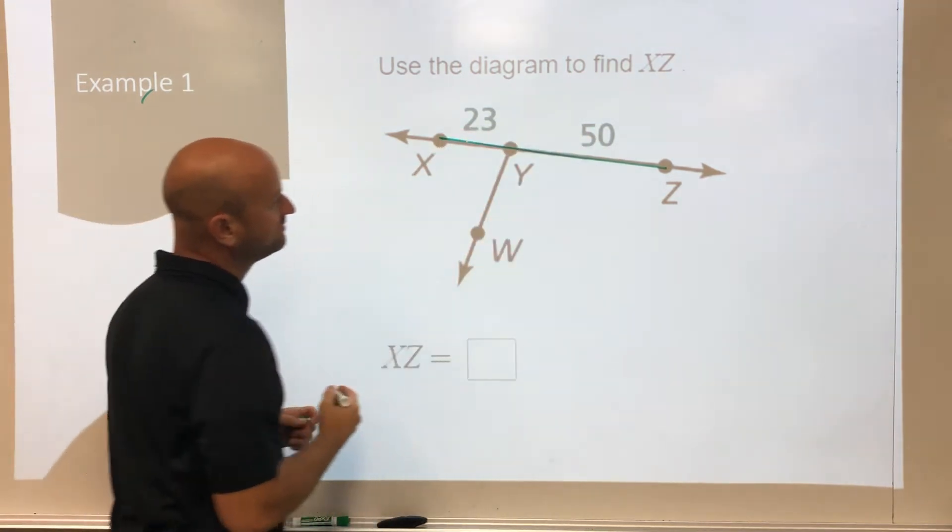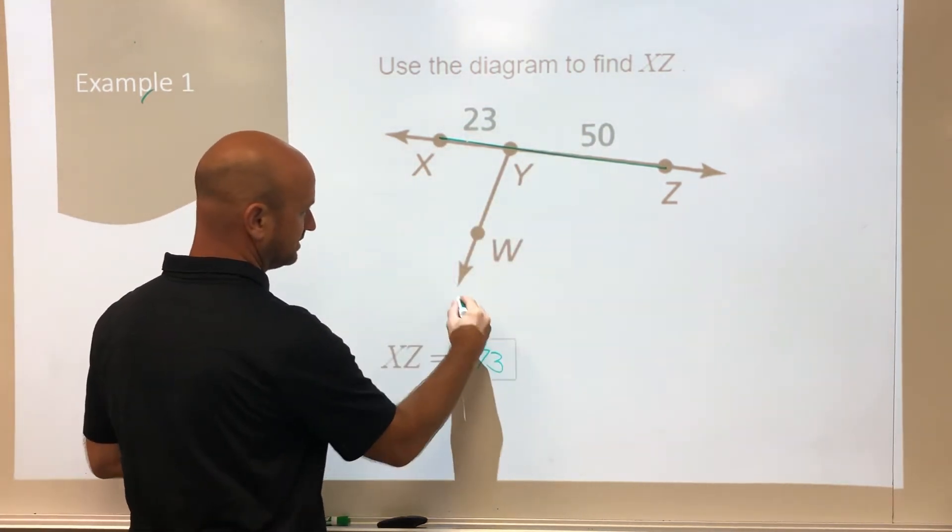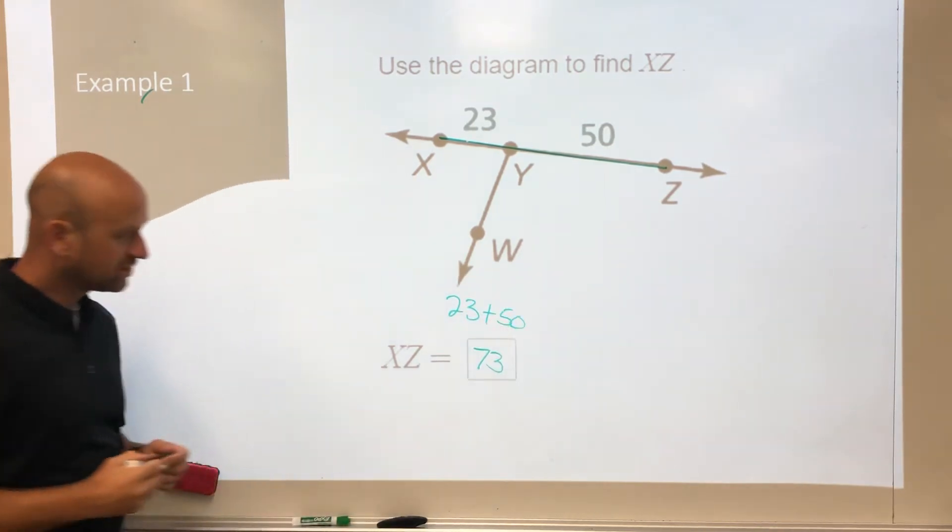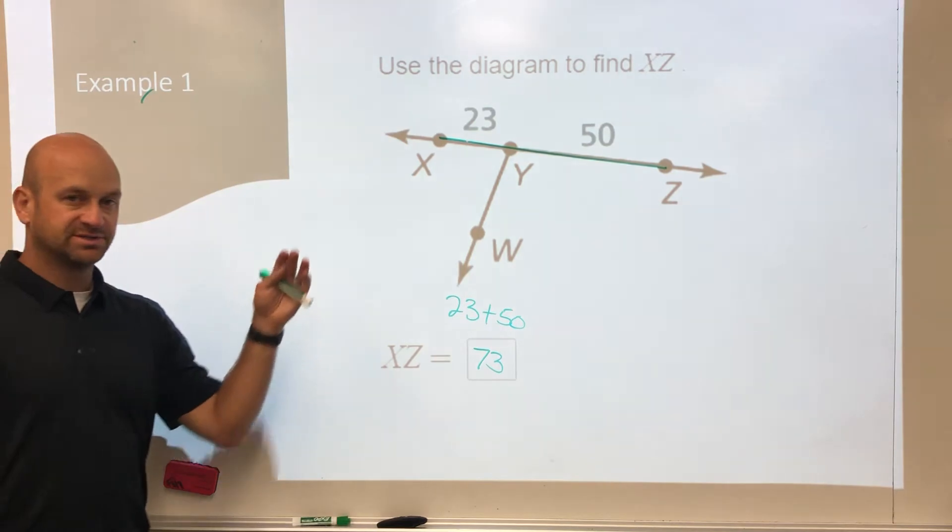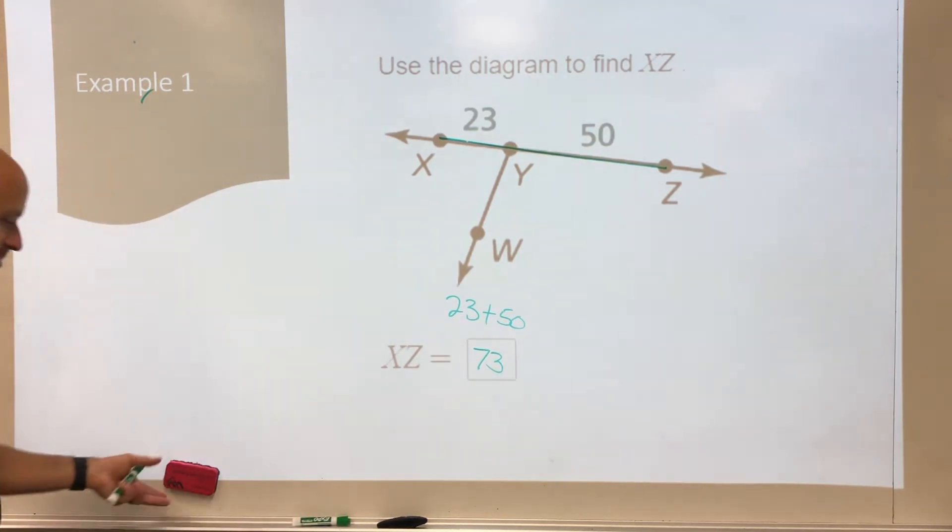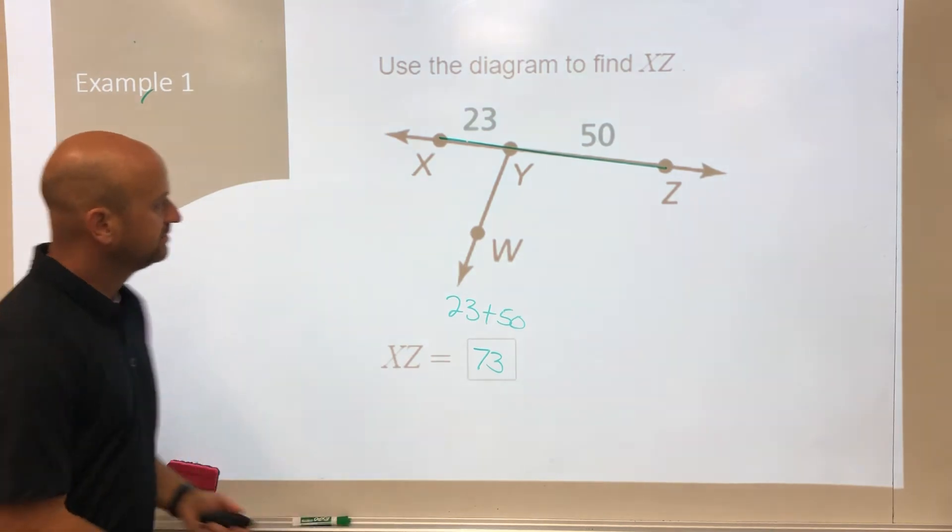If we add 23 plus 50 that gives us 73 as our answer. So 23 plus 50, again why are we adding? Because they want the whole thing. If we need to find the whole we have to add up the parts.